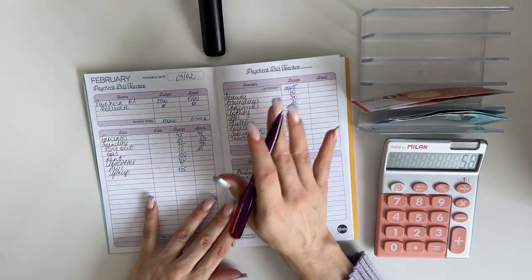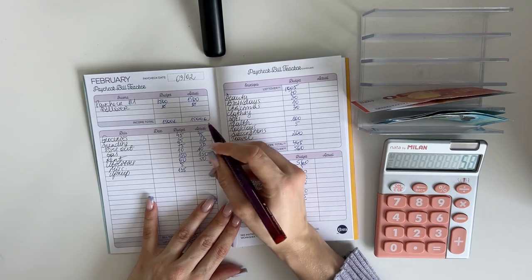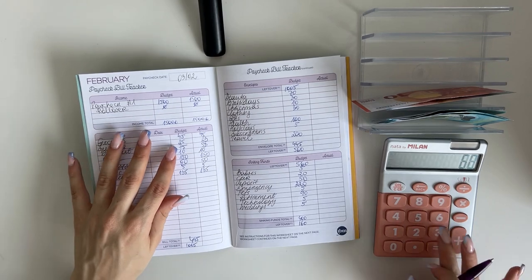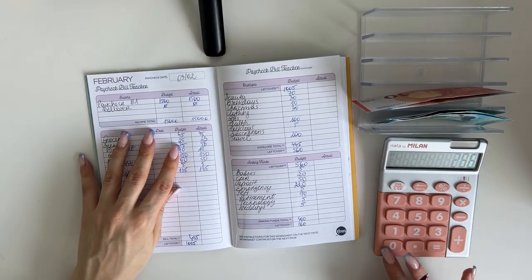All the rest stayed the same. Gas got 10, utilities 15, rent 15, miscellaneous got 5, and upkeep 135. So in total bills and cash envelopes was 476.